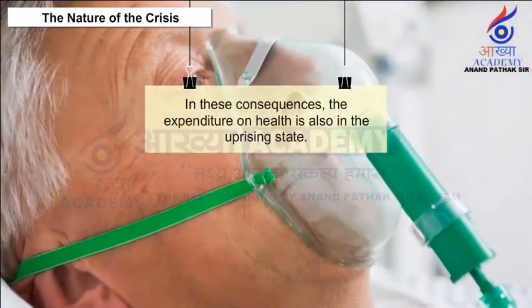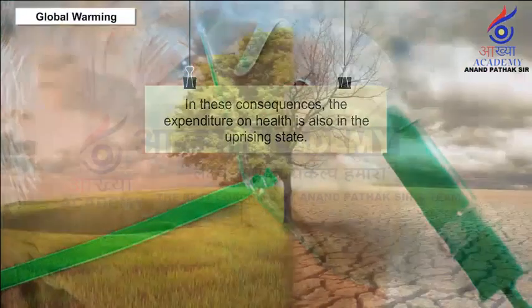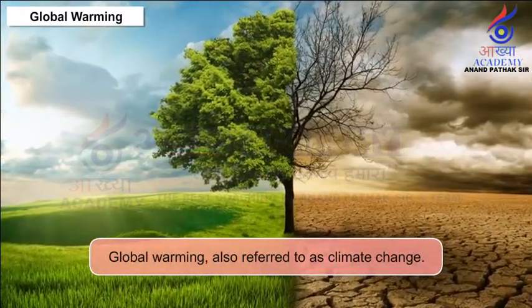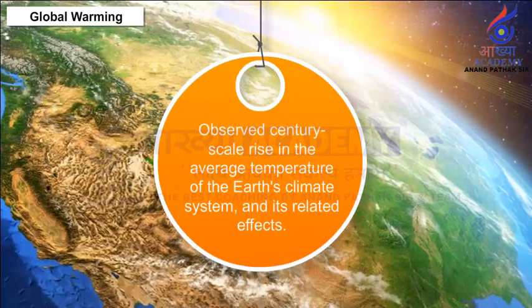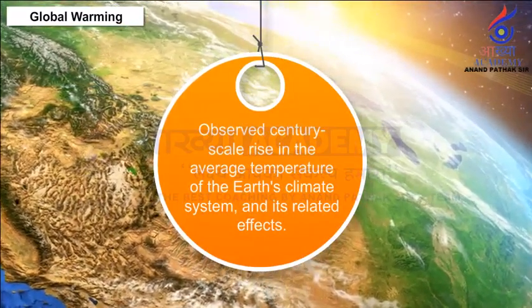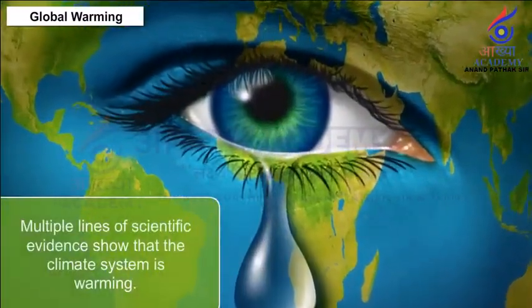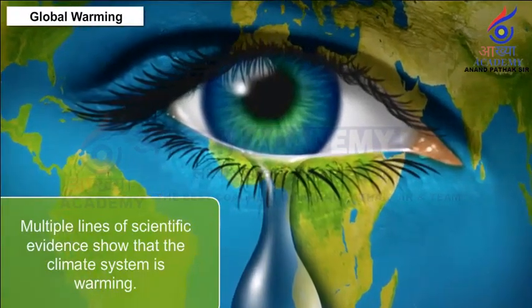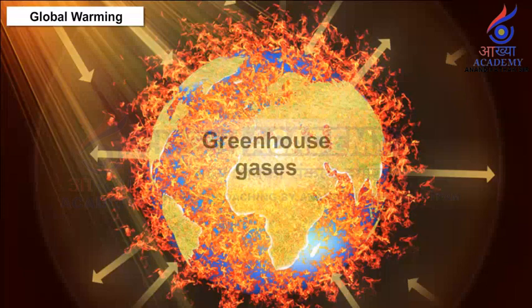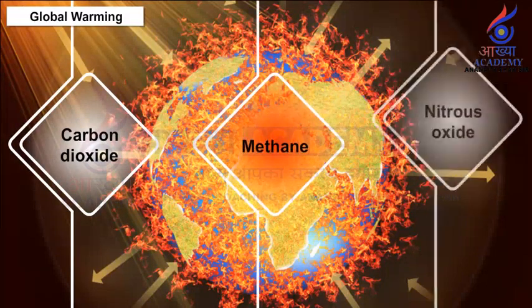The expenditure on health is also in an upward trend. Global warming, also referred to as climate change, is the observed century-scale rise in the average temperature of the Earth's climate system and its related effects. Multiple lines of scientific evidence show that the climate system is warming. The largest human influence has been the emission of greenhouse gases such as carbon dioxide, methane and nitrous oxide.